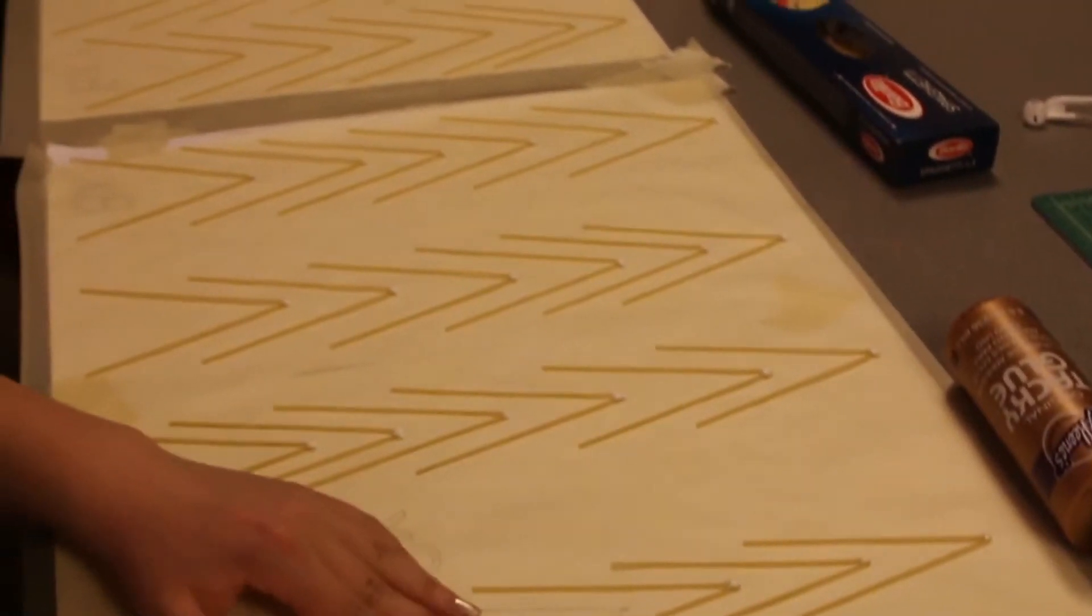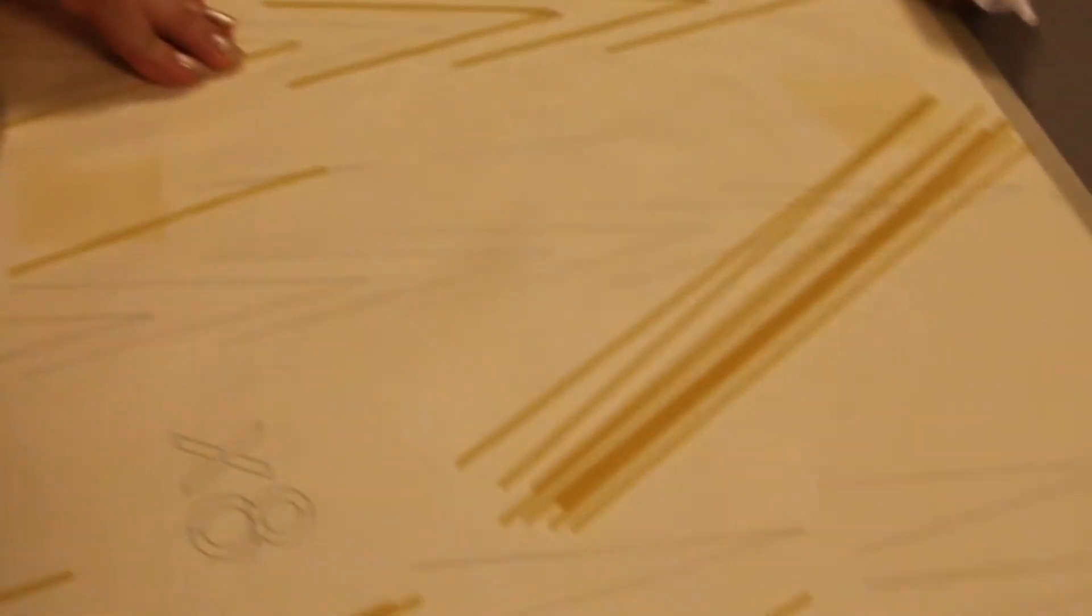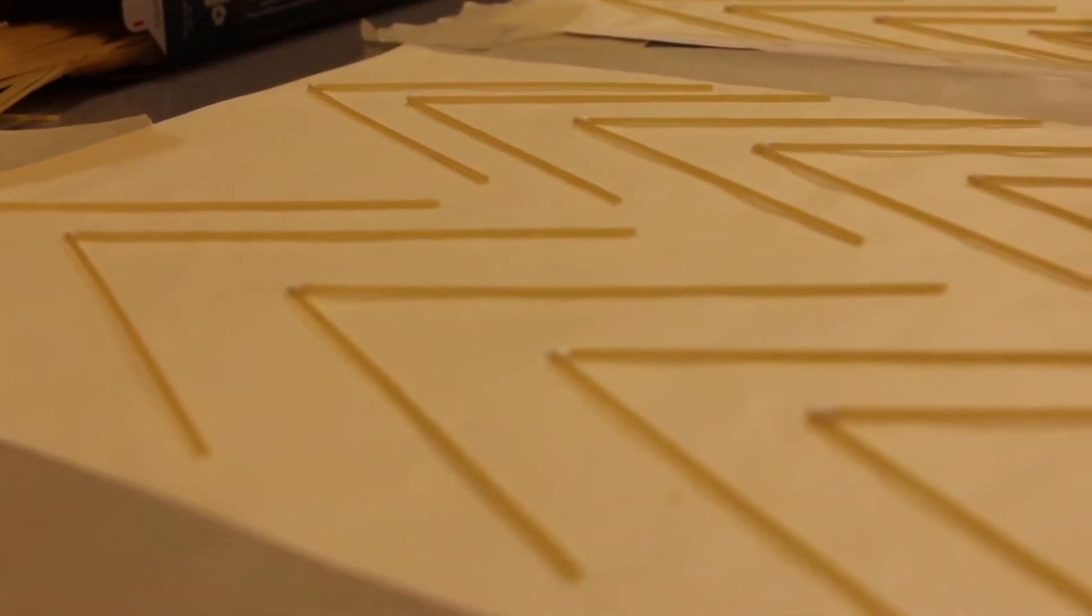For our spaghetti tower, right now we have multiple different concepts that we're trying to work with. We're not sure which way we're going to go yet, but we started out with the theory of the hexagon because it creates six different equilateral triangles, and triangles are the strongest geometric shape.